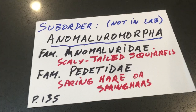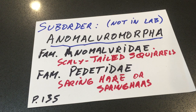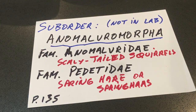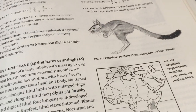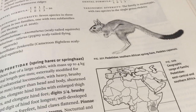The other very distinctive creature we're dealing with here is the spring hare of South Africa. Page 135 in your lab manual has a nice diagram. They're also in your textbook, but here you can see on page 135 an image of a spring hare, the family Peditidae.